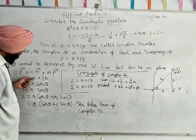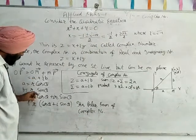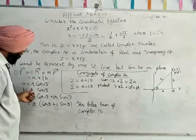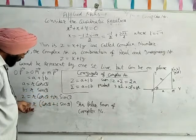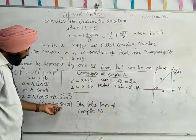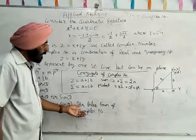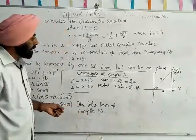Then z = r cos theta + i r sin theta. This will become r(cos theta + i sin theta). It is the polar form of the complex number.